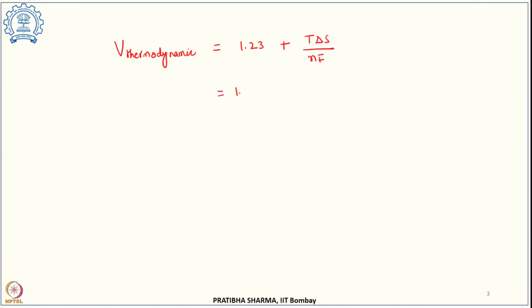That is 1.23 plus (298.15 × 0.12) / (2 × 96500). Temperature is 298.15 Kelvin, entropy change is 0.12 kilojoule per mole per Kelvin, number of electrons transferred is 2, and Faraday's constant is 96500. Solving this gives the thermodynamic voltage as 1.23018 volt.